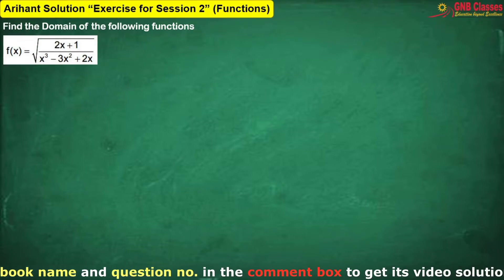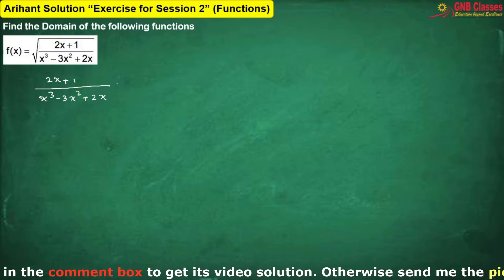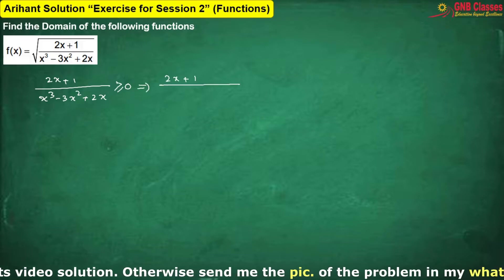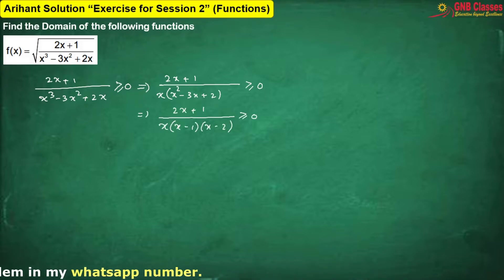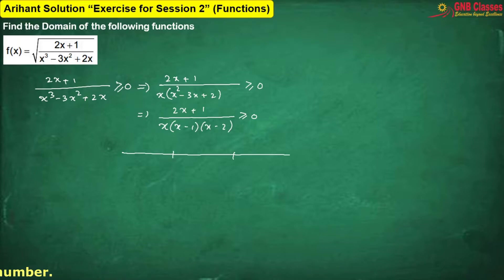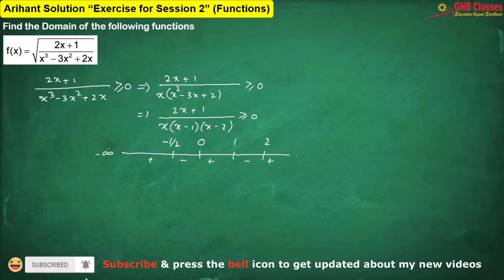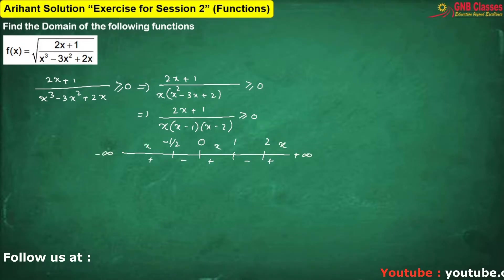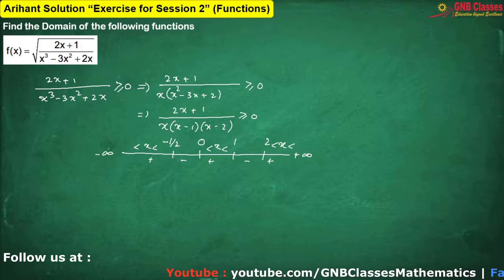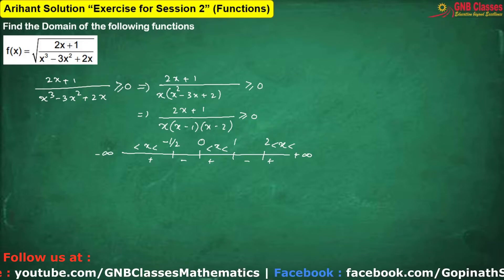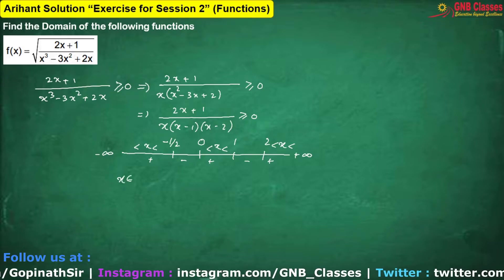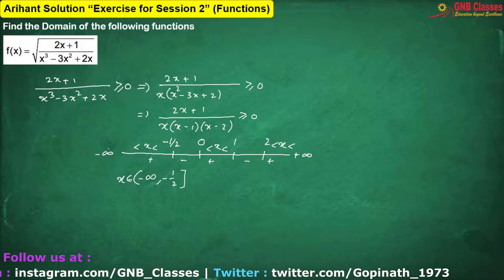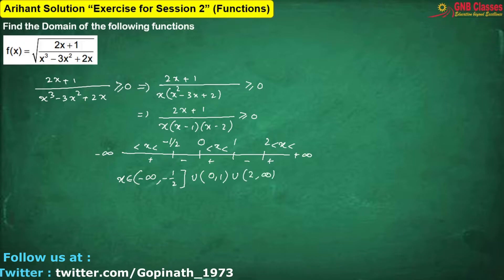For the next problem, to define this function, the expression inside the root must be greater than or equal to zero. Factorizing the denominator and applying the number line method, we get the result. Therefore, the required domain is x ∈ (-∞, -½] ∪ [0, 1) ∪ [2, ∞). Let us move to the next problem.